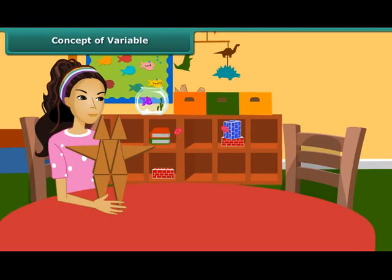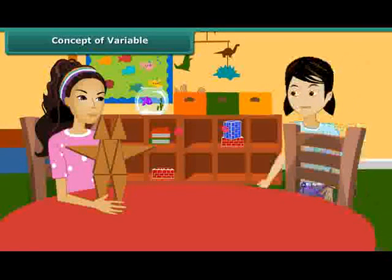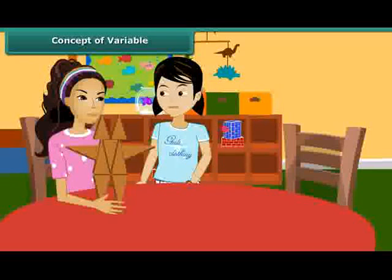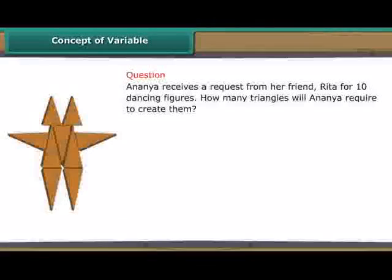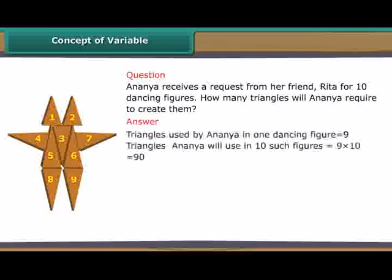Ananya creates dancing figures using triangles made of wood. One day she receives a request from her friend, Rita, for 10 such dancing figures. How many triangles will Ananya require to create them? Take a careful look at the dancing figure. Ananya uses 9 triangles to create it. Therefore, in 10 dancing figures, Ananya will use 9 into 10 is equal to 90 triangles.